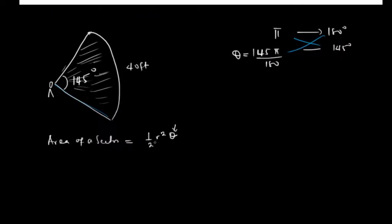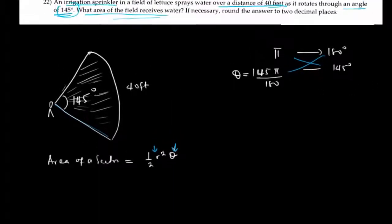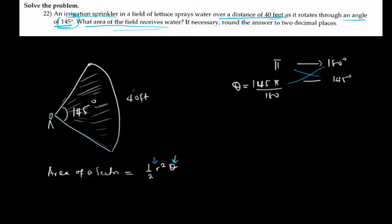Now we know the value of theta, but to find the area of a sector I also need to know the radius, which I am not directly given. However, I have been given information that will help me determine it: the length of the arc is 40 feet. So I'm going to use that to find the radius. The length of arc of a sector is given by s = rθ. So our s, which is the length of the arc, is 40, which equals the radius times theta.